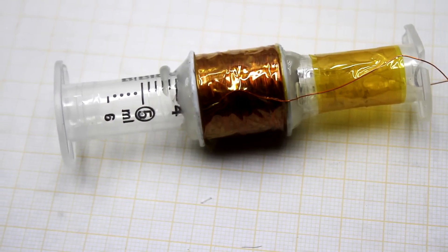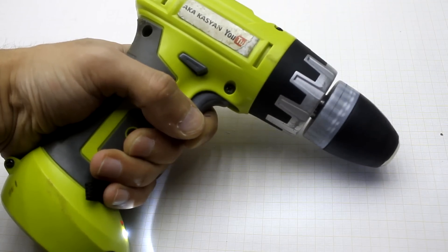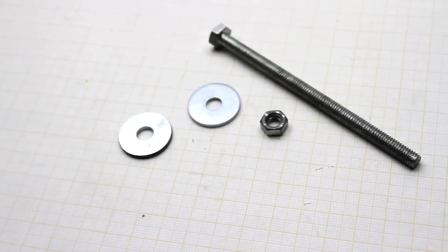You can wind the winding manually, but if you have an electric screwdriver and a couple of small parts, you can quickly assemble the winding device.